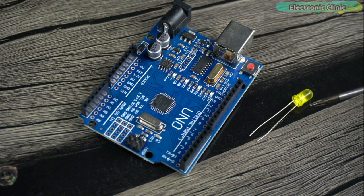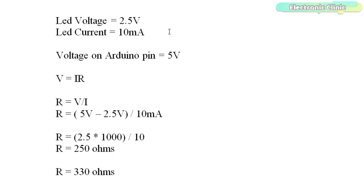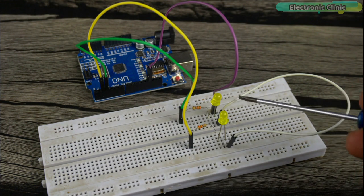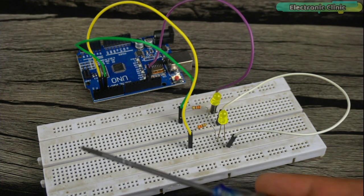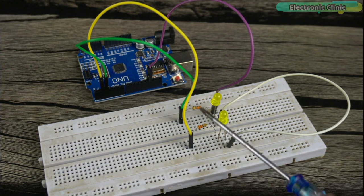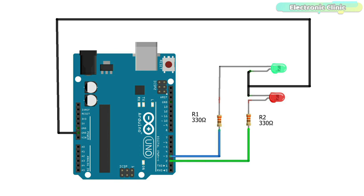The Arduino Uno and Nano are 5V compatible controller boards, meaning 5V are available on I/O pins when turned on. If you directly connect 2.5V LEDs they will burn out. We need a current limiting resistor. The LED voltage is 2.5V, LED current is 10mA, and Arduino pin voltage is 5V. Using V = IR, the resistor value is 250 ohms. Don't select a resistor less than 250 ohms — go for a slightly bigger value to increase LED lifespan. I always select 330 ohms and it works perfectly.